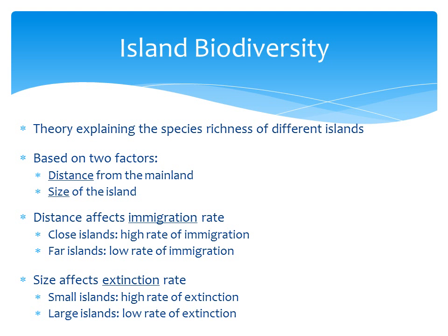Island biogeography is a theory explaining the species richness of different islands. It's based mainly on two factors: the distance of the island from the mainland, or any other large body of land, and the size of the island — how big it is.